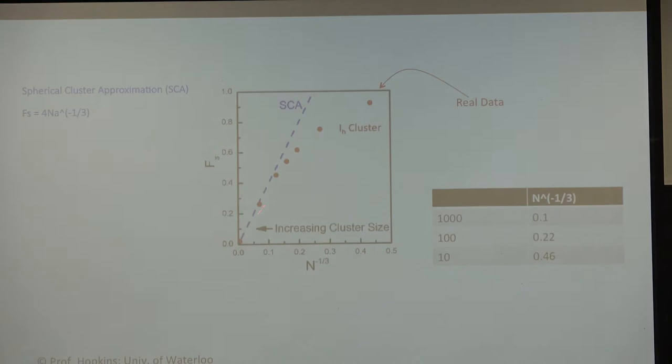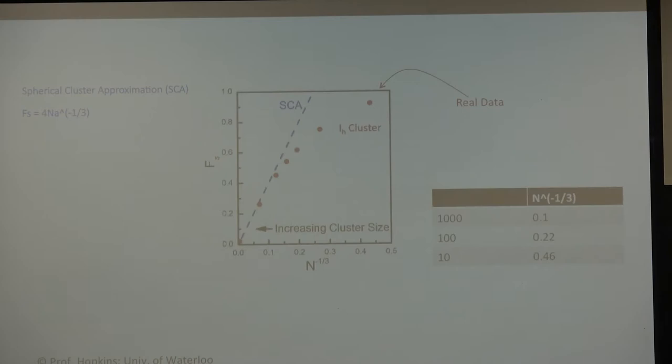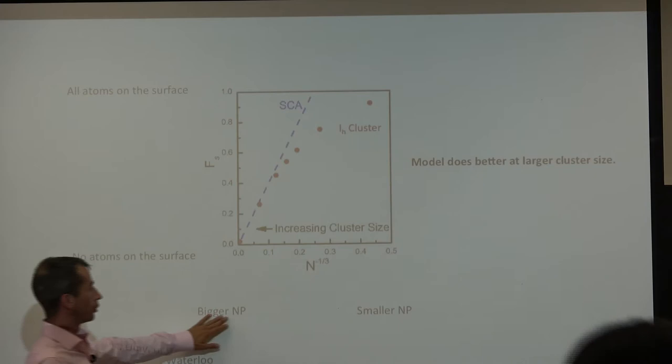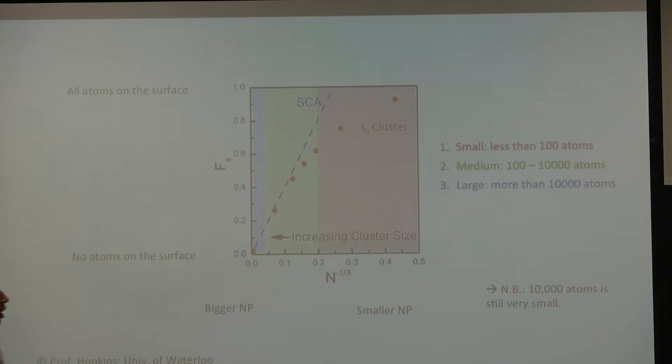So what you see then is that there starts to be a match between theory and observation at bigger particle numbers. And that makes sense, right? This is where we saw it started to become really erratic, where we would show more than 100% of the atoms were on the surface. Bigger nanoparticle, smaller nanoparticle, where does theory match observation? At these bigger particles.